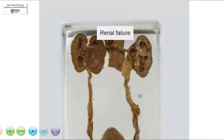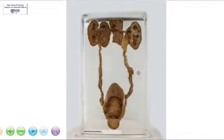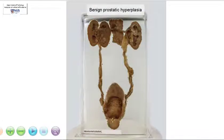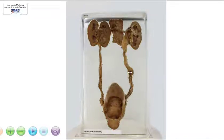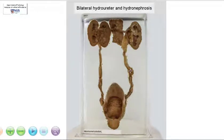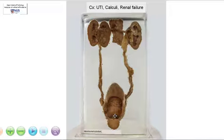Just to recap, this is an example of lower urinary tract obstruction caused by benign prostatic hyperplasia, giving rise to urinary retention in the bladder, bladder hypertrophy, bilateral hydroureter, as well as hydronephrosis. This is also a potential cause of urinary tract infection because of the stasis of the urine, and also urinary tract calculi.